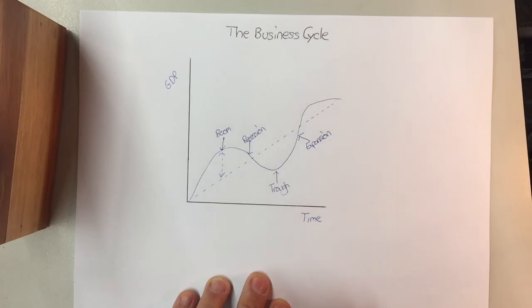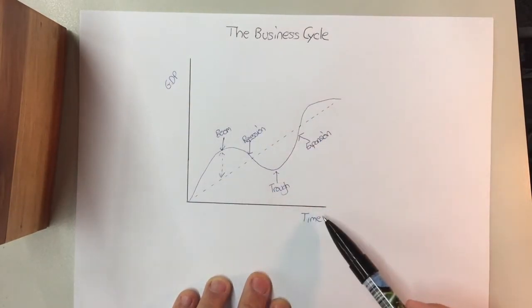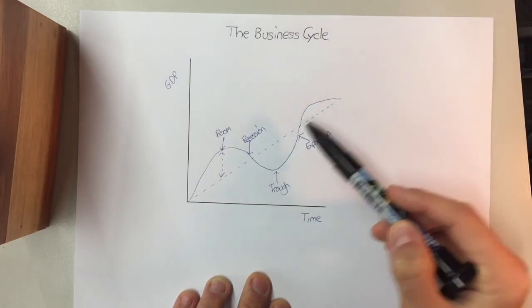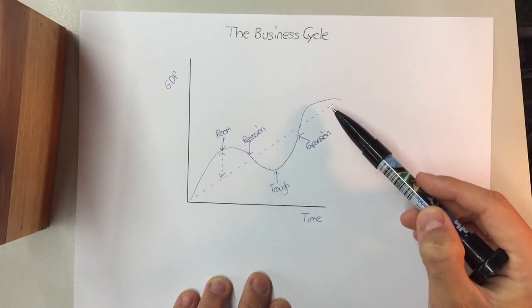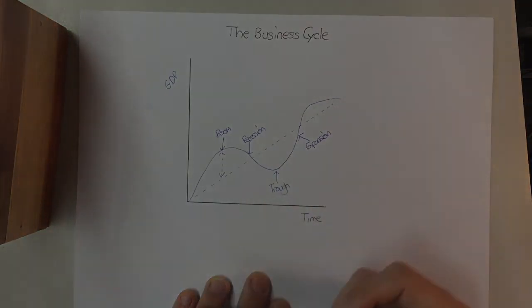But that's the business cycle. So key thing to remember is GDP is on this side and time is on this side. And you have your long term potential, which is steady and is what it should ideally be. But in reality, we go above what's expected and then we go below what's expected.